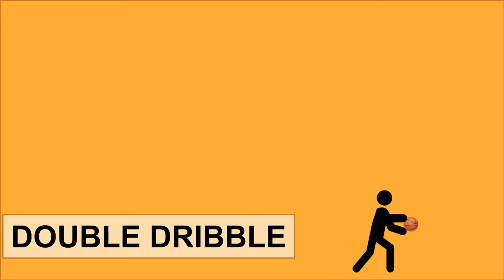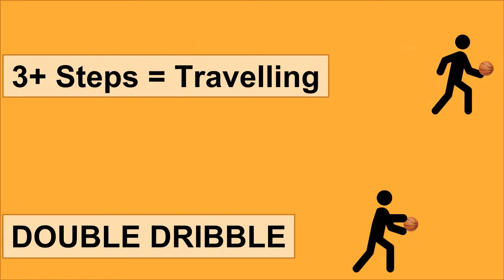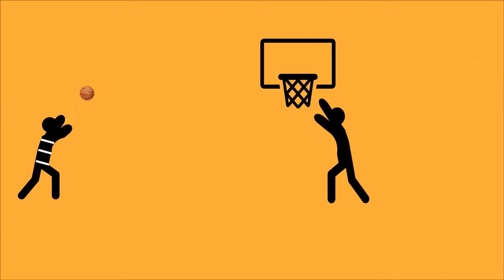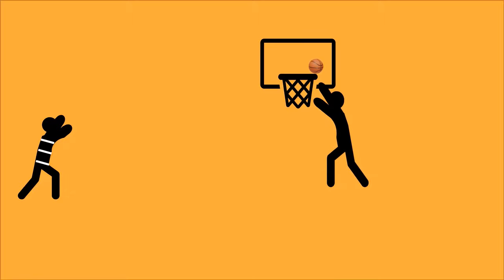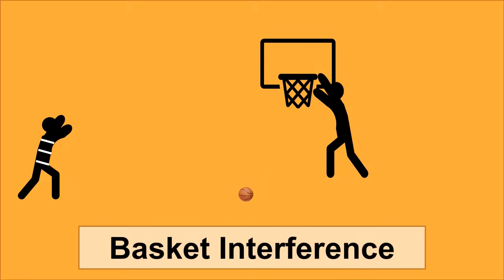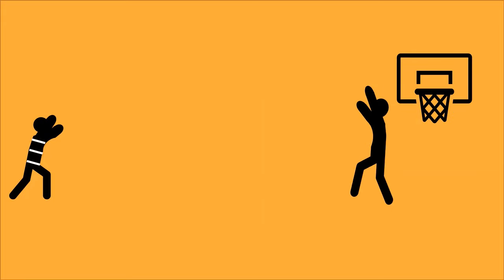If you get the ball and dribble with two hands, that is not allowed — it's called a double dribble. You can only use one hand at a time; you can switch between left and right, but only one hand at a time. If you run while carrying the ball without dribbling, that is traveling — you cannot move more than three feet while holding the ball. Also, if your opponent's shot is on the rim and your player tries to tip it off, that is basket interference — you cannot do that.